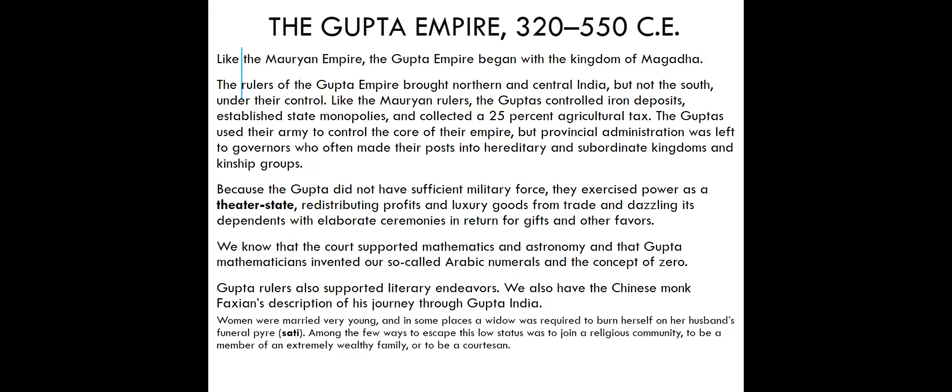Doctors in the Gupta Empire discovered that if they took a needle, dipped it into an active pox of a person, and then poked another individual with that same needle, the individual developed a very mild case of the virus but was able to fight it off and became immune. This virus would later be called smallpox. The first vaccine for smallpox actually originated in India, though unfortunately that knowledge was lost when the Gupta Empire fell.